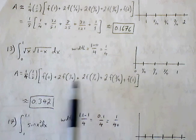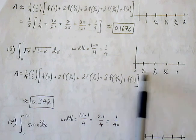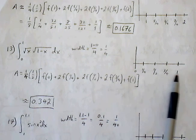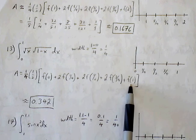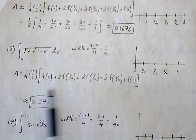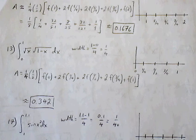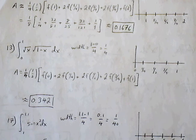starting at f of 0, and then we're going to be doubling each of the heights in between, and then the right end point, we're going to be using 1, so f of 1. All this plug in your calculator, you're going to get an approximation of 0.342 using four trapezoids.